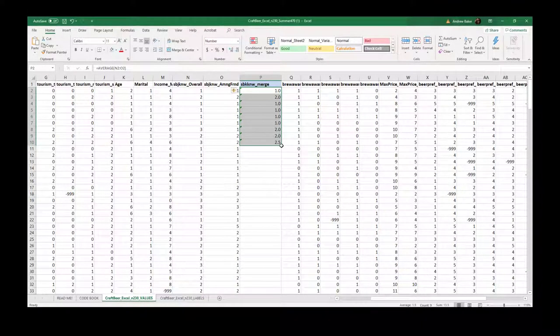And since there is a continuous set of values down the rows here we don't have to drag this. We can just double click it. Works great.